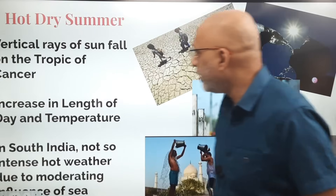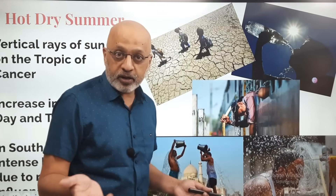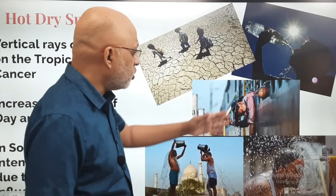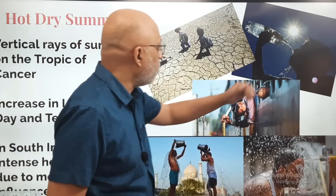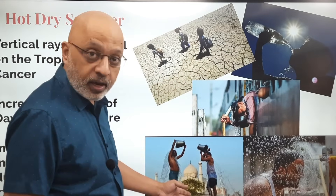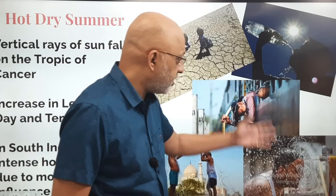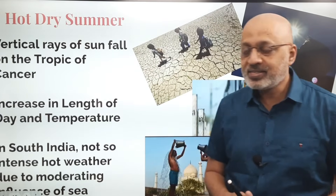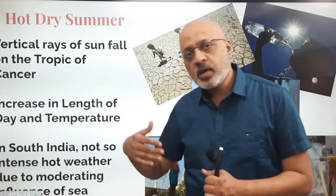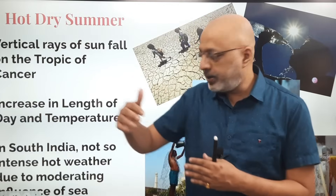Now the hot dry summer. Newspapers publish photographs on a daily basis — people cooling themselves on trains, drinking water, parched earth, people bathing near taps. These fascinating photographs give you a sense of the intensity of summer in India, which happens generally during March, April, and May.